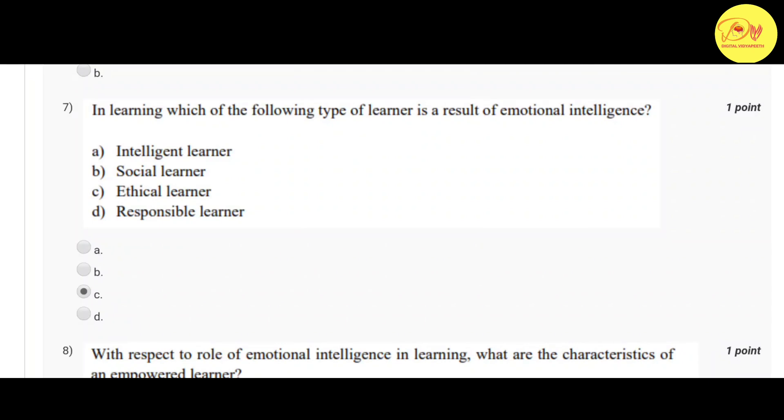Our sixth question is: emotional intelligence is a continuous lifelong learning. Correct option is A, true. Our seventh question is: in learning, which of the following type of learner is a result of emotional intelligence? Correct option is C, ethical learner.